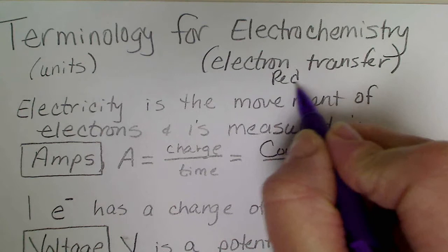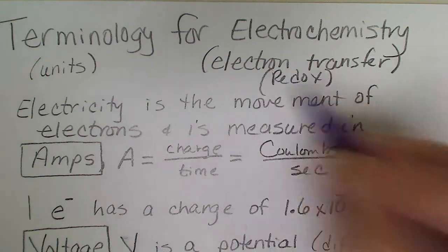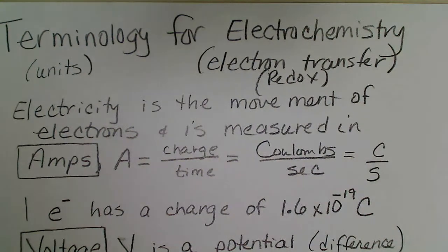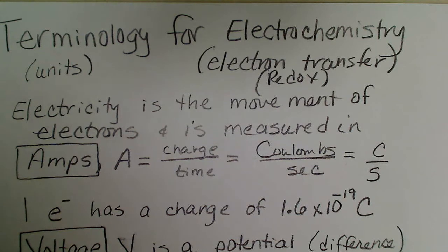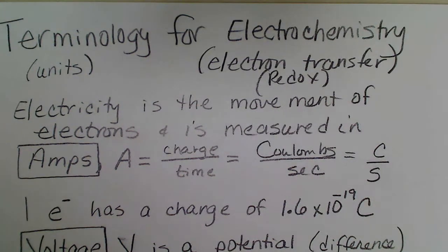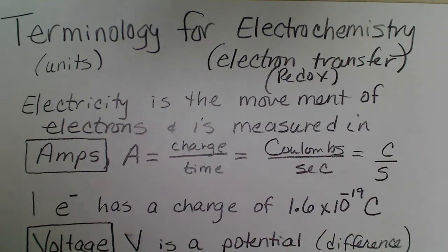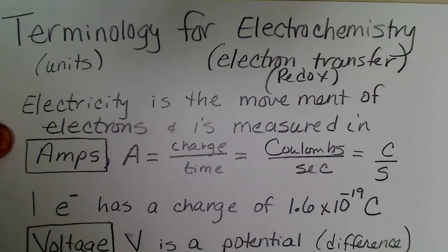When one metal or atom is oxidized, there has to be another metal or atom there to be reduced. Electricity is defined as the movement of electrons.